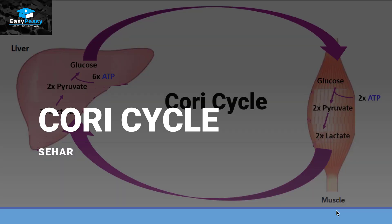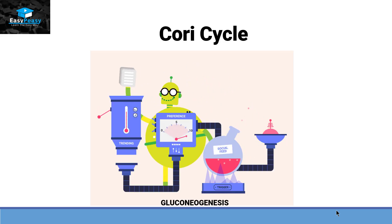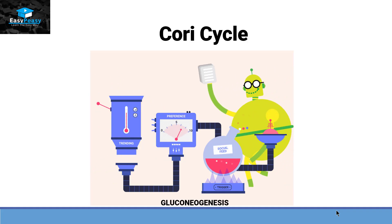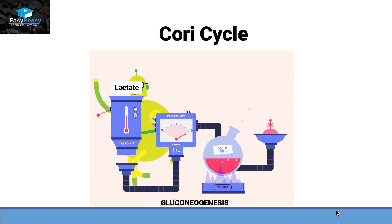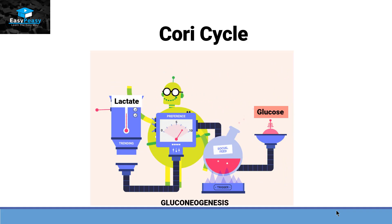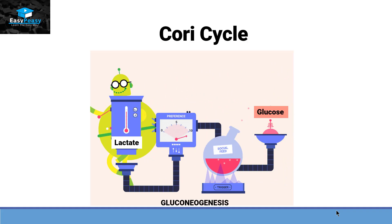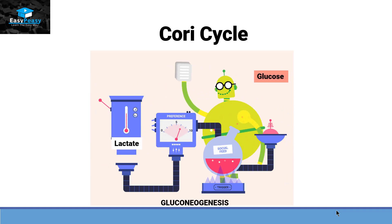Hello friends, this is Seher from Easy Peasy and the topic we are going to discuss today is called the Cori Cycle. The Cori Cycle is a type of gluconeogenesis in which the substrate used to make glucose is lactate. So lactate is taken in and glucose is made from this process.